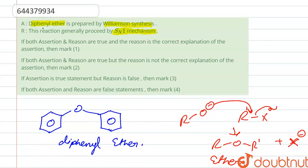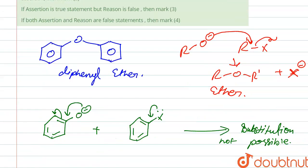And here, so coming toward our assertion, that is diphenyl ether is prepared by Williamson synthesis, so it is wrong. Next, this reaction generally proceeds by SN1 mechanism, so we know that SN1, in SN1 reaction, it is a carbocation formation, carbocation formed.